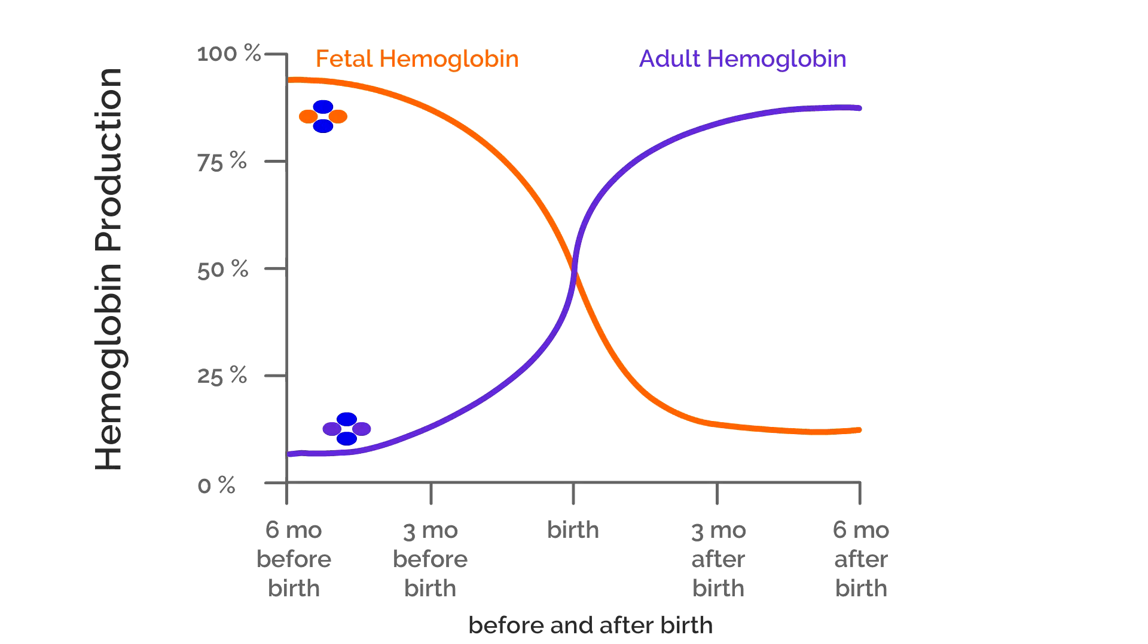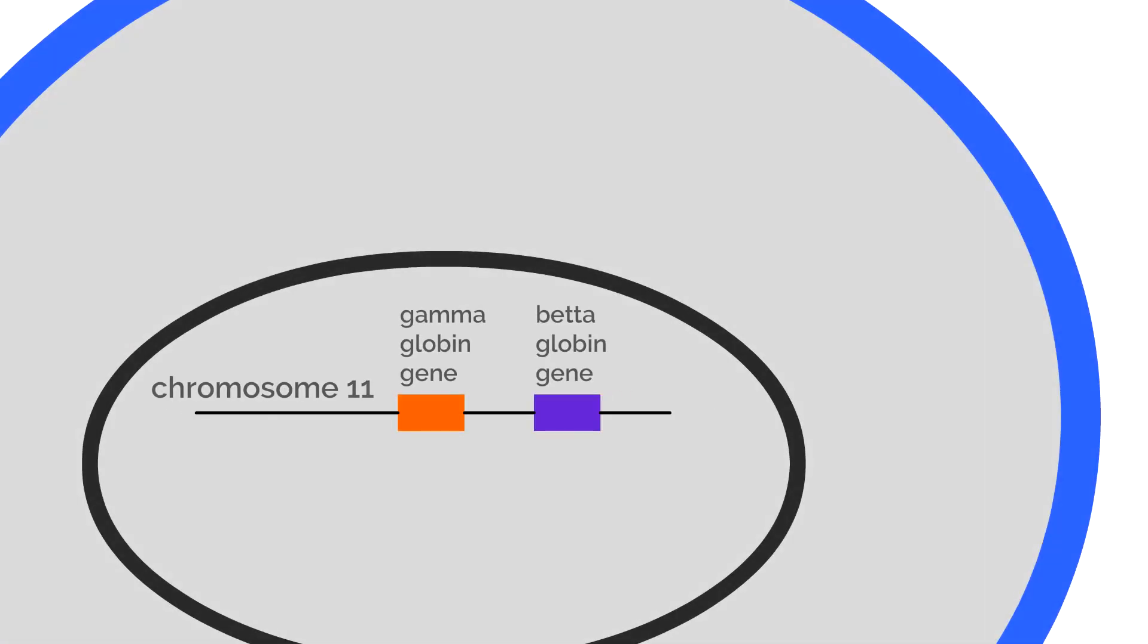Beta-globin starts performing its function. The genetic mechanism that blocks production of gamma-globin involves another gene called BCL11A located on a different chromosome. Protein produced by BCL11A binds to DNA near the gamma-globin site, stopping its production.